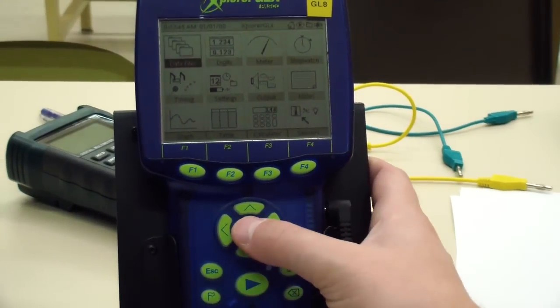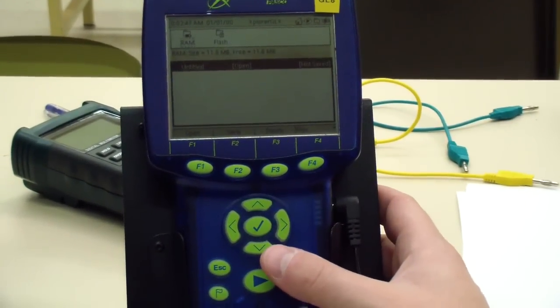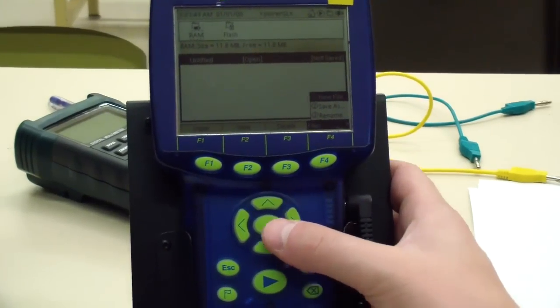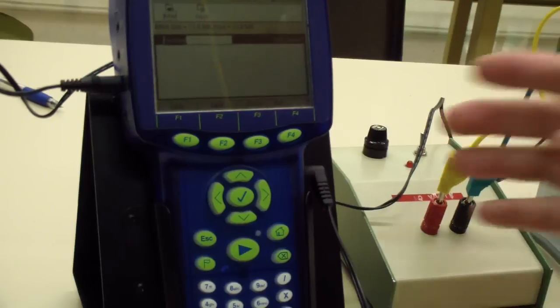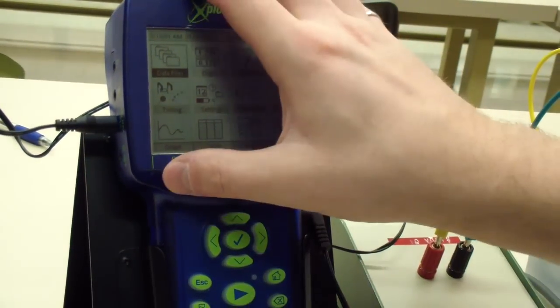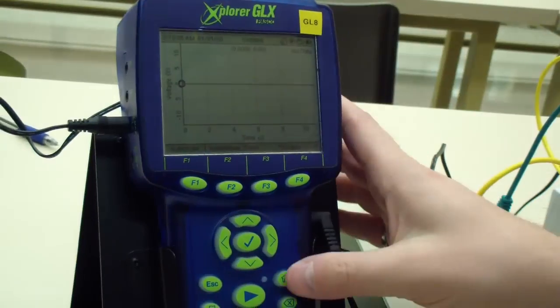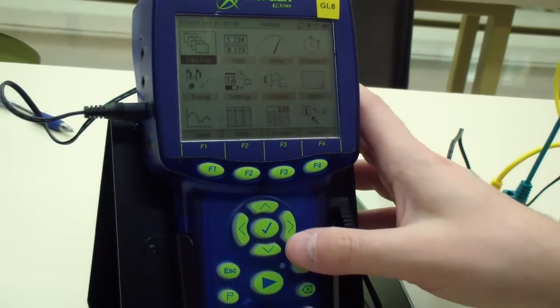To prepare the GLX for data collection, you'll need to turn on the GLX and press the home button. Then use the arrow keys to highlight the data files menu and press the check mark. Press F4 to open the file menu and select a new file. Press the home button on the GLX. Press F1 to select the graph option. A graph of voltage versus time should then appear.